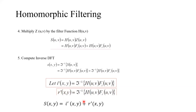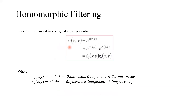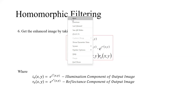In the next step, we convert the sum term back into a product term by taking the exponential, since the inverse of logarithm is the exponential. We represent the result as g(x, y) = e^(s(x, y)) = e^(i'(x, y) + r'(x, y)) = e^(i'(x, y)) × e^(r'(x, y)). Here, e^(i'(x, y)) is the illumination component of the output image, denoted i₀(x, y), and e^(r'(x, y)) is the reflectance component of the output image, denoted r₀(x, y). The entire process of homomorphic filtering is complete and we obtain the enhanced image.